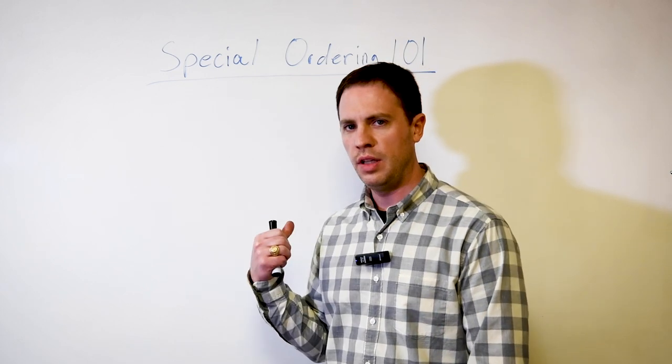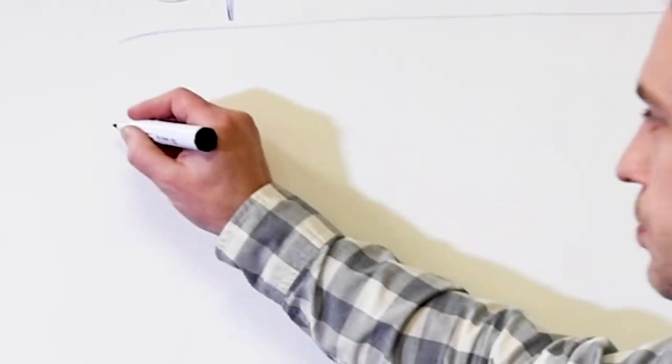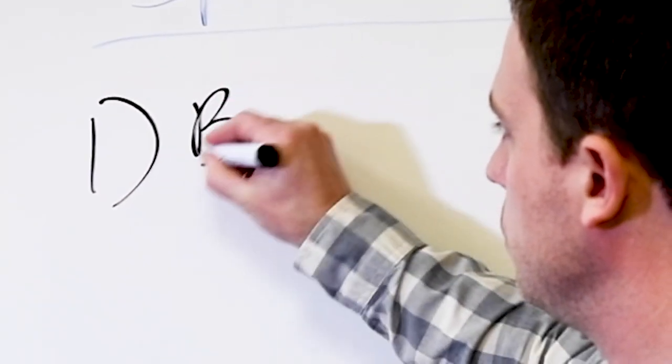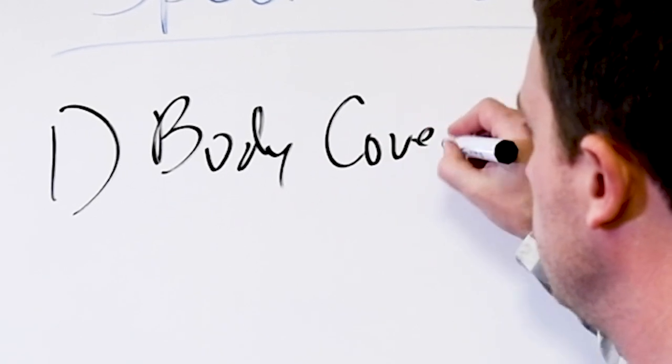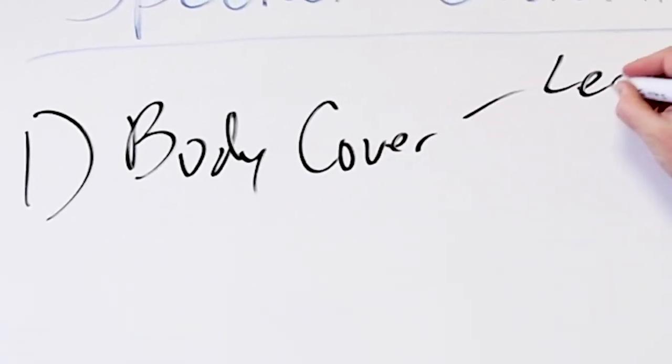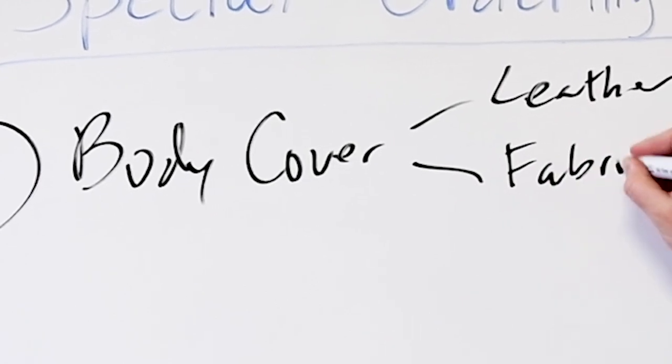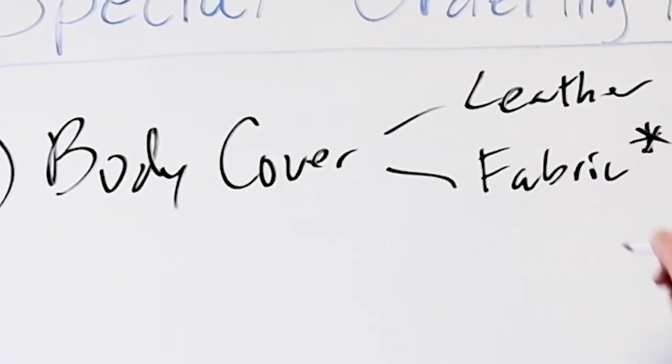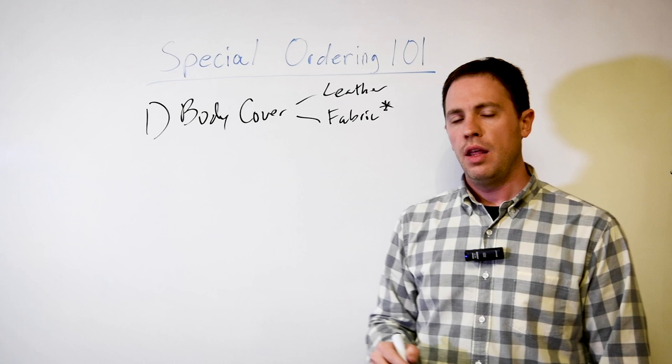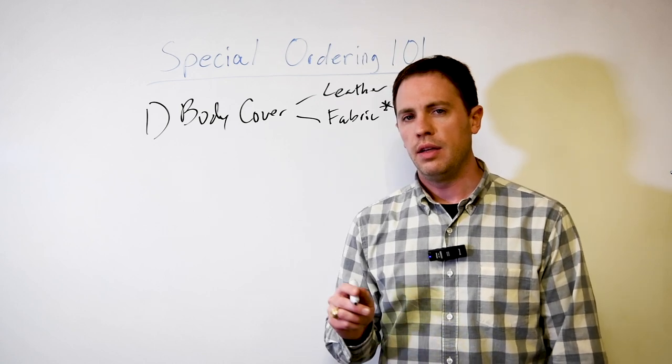So first step: the body cover. It can be leather or fabric. Now put an asterisk next to the fabric. One thing that you need to understand is on some of these frames that are larger—say the 3620—the frame is literally wider than an up-the-roll fabric.